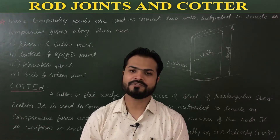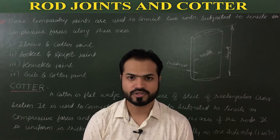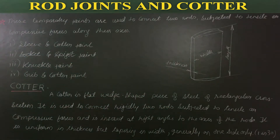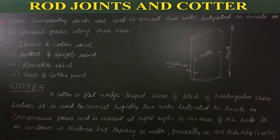Hello everyone. After bearings, let's see what rod joints are. These temporary joints are used to connect two rods subjected to tensile or compressive forces along their axis. These joints are temporary, meaning detachable joints used to connect two rods subjected to tensile or compressive forces.